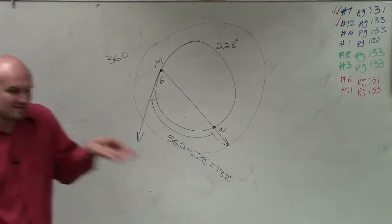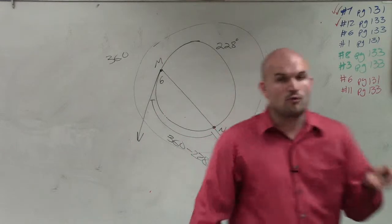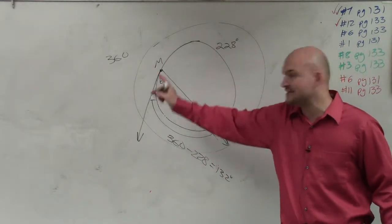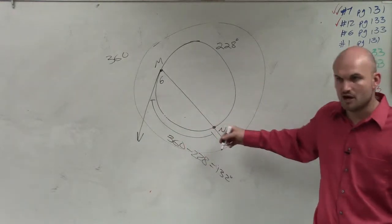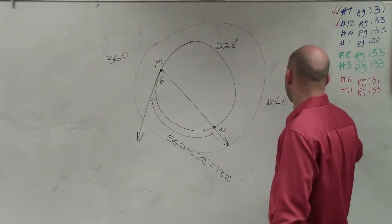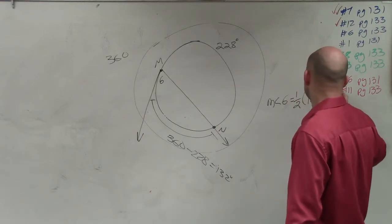Remember, when you have an angle on the circle and one line is secant and one line is tangent, the measure of your angle is 1 half of its arc. So the measure of angle 6 is equal to 1 half of 132 degrees.